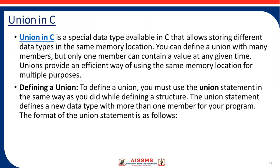Next is union in C. Union is similar to structure. A union in C is a special data type available in C that allows storing different data types in the same memory location. You can define a union with many members, but only one member can contain a value at any given time. Union provides an efficient way of using the same memory location for multiple purposes. To define a union, you must use the union statement in the same way as you did while defining the structure. The union statement defines a new data type with more than one member.